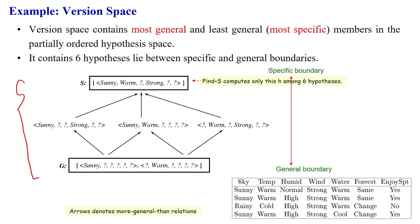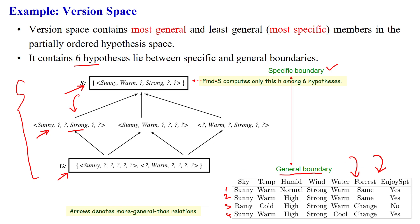Looking at the hypothesis space derived from training examples x1, x2, x3, x4 — this is the general boundary and this is the specific boundary of the version space. This is the more specific hypothesis and this is the more general hypothesis. In between the specific and general boundary are hypotheses that are neither minimal nor maximally general. All six hypotheses satisfy the minimal general and minimal specific boundary conditions, satisfying the given dataset D.